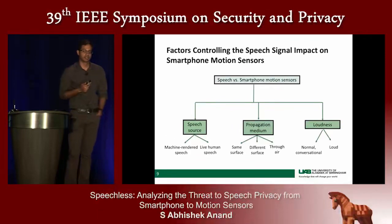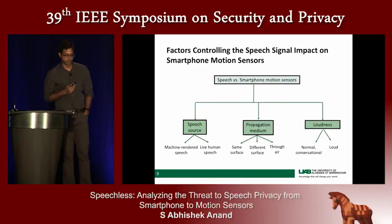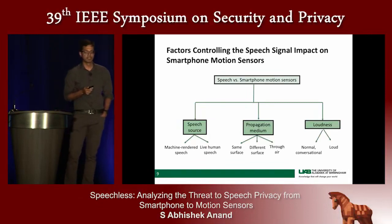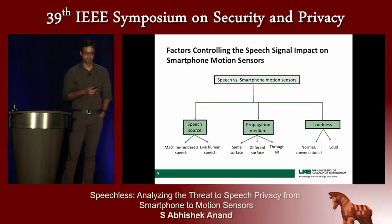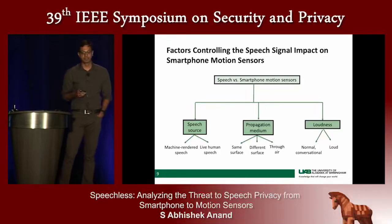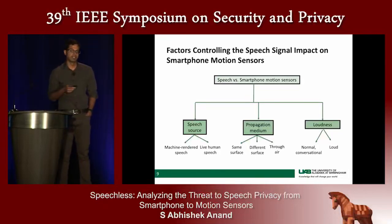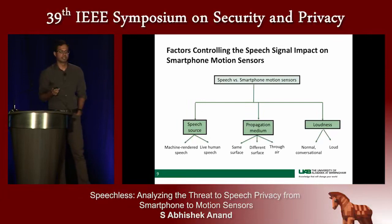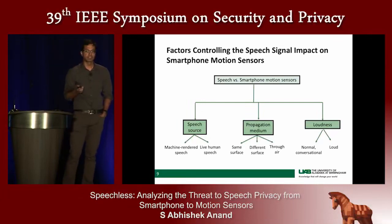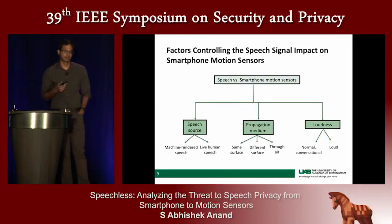Machine rendered audio sources include the loudspeaker setup and phone speakers, and they differ from live human speech in that we can fine-tune their loudness and richness. The propagation medium refers to whether the smartphone containing the motion sensors and the audio source are placed on the same surface or on different surfaces. For human speech, the signal has only one propagation medium: through air. The loudness level of normal conversational speech is below 60 decibels, while loud speech is above that.